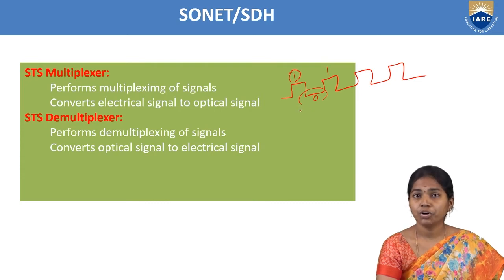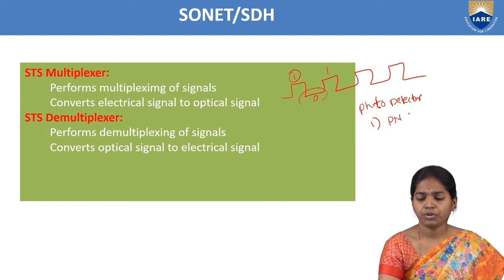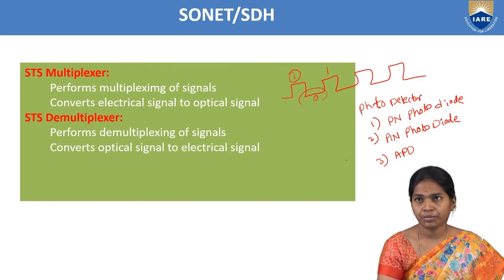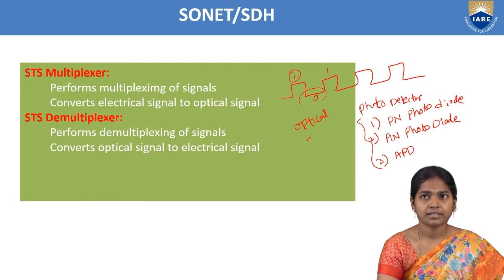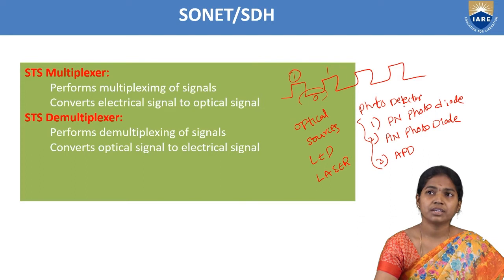At the demultiplexer, the light signal is converted back to electrical form using photodetectors. The photodetectors are: PN photodiode, PIN photodiode, and Avalanche photodiode. These are the photodetectors and the optical sources are LED and laser. The STS demultiplexer performs demultiplexing of signals and converts optical signal to electrical form using photodiodes.